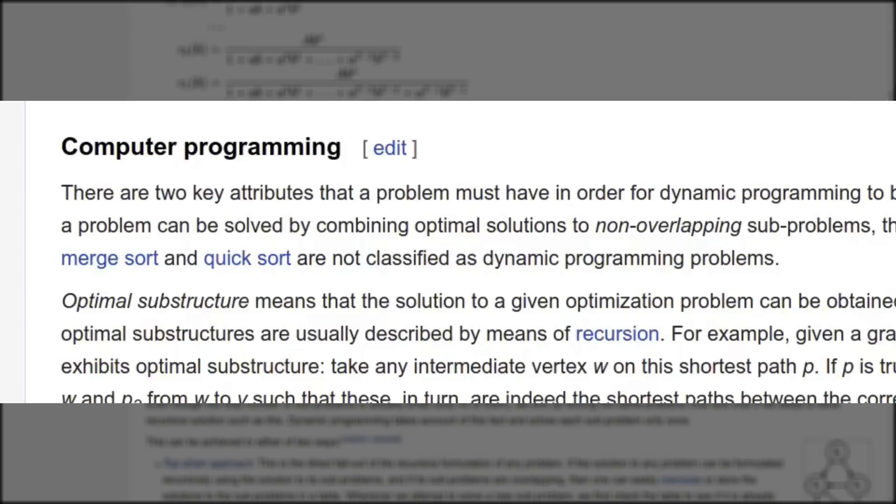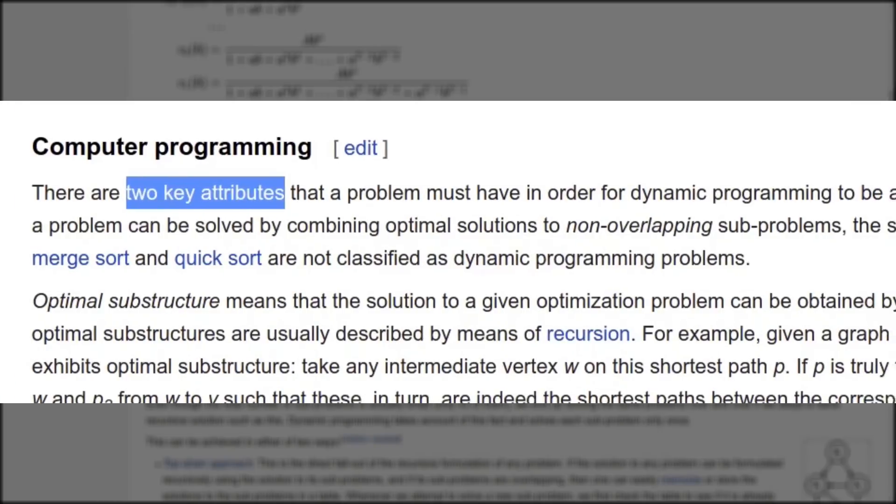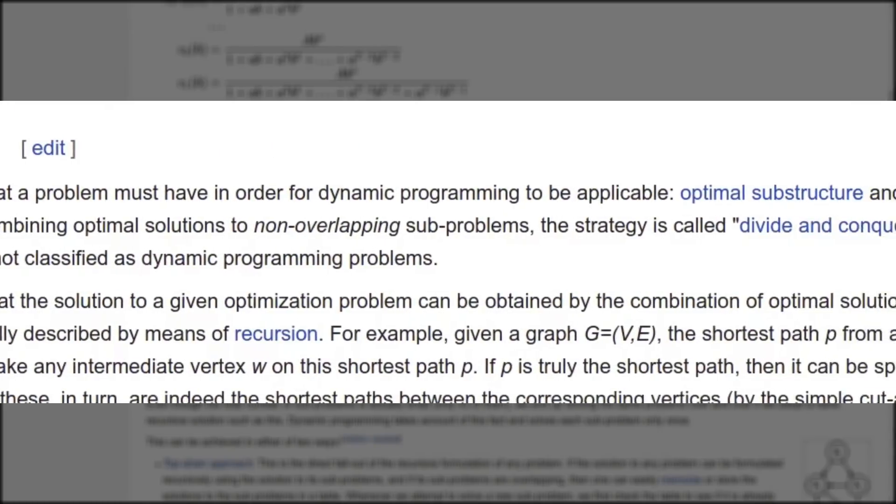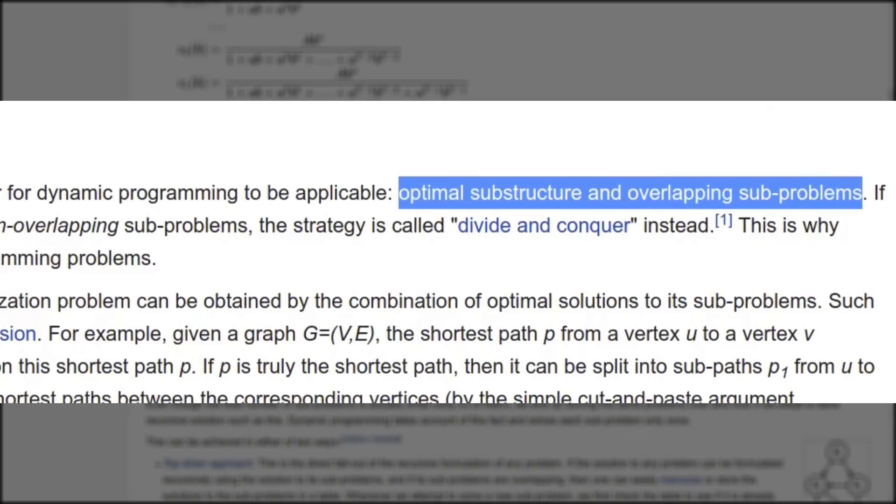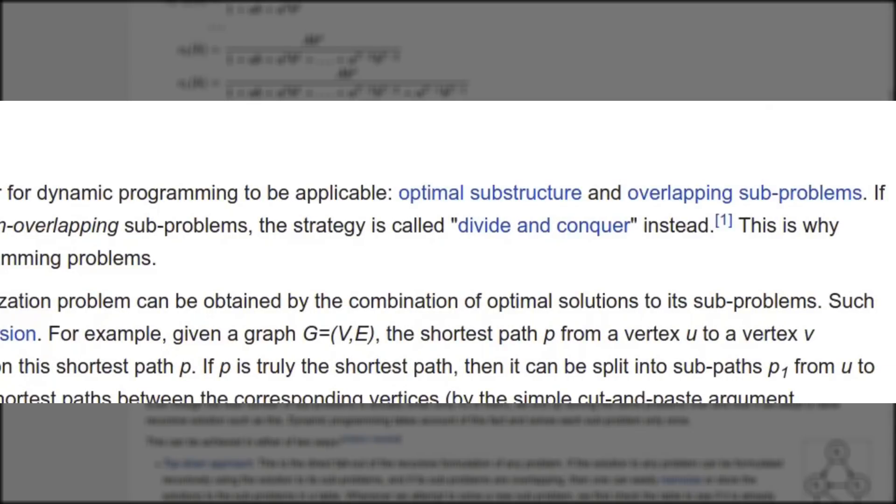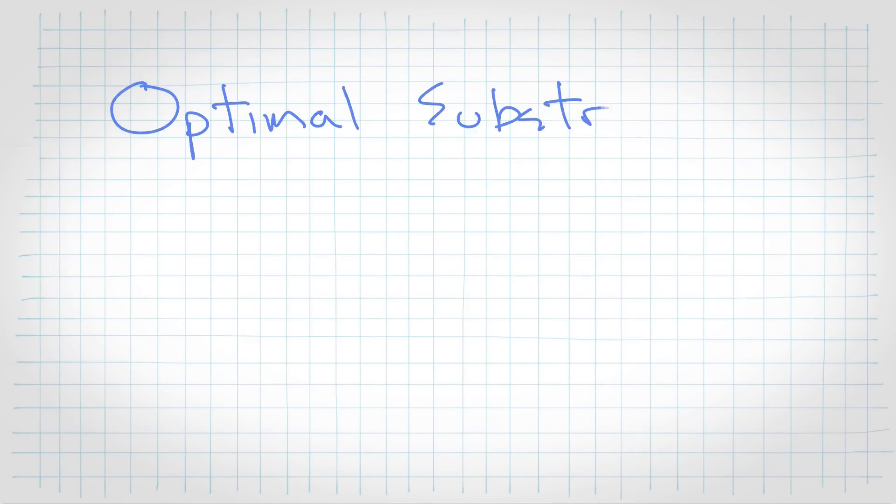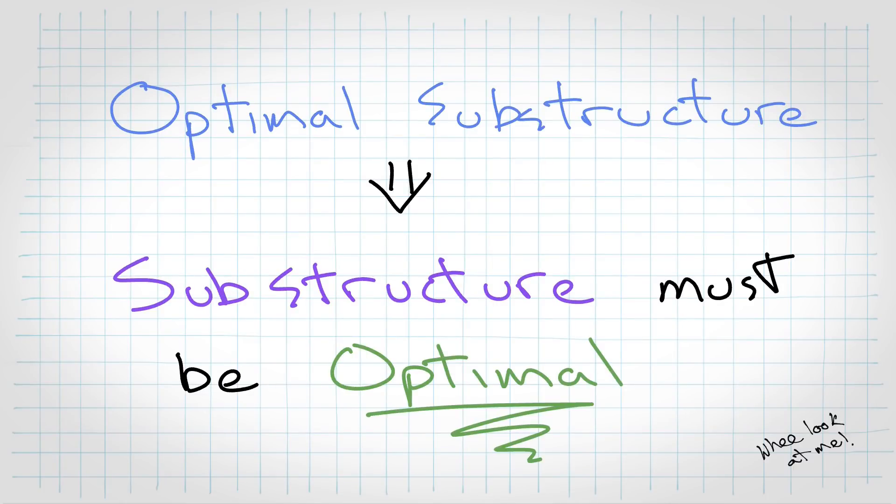And there's just a couple prerequisites for it to kind of qualify as dynamic programming. Those being that it has what's called optimal substructure. And the second requirement is that it has overlapping sub-problems. So, having an optimal substructure means that the substructure must be optimal. Duh. Okay, now that I'm done being unhelpful,